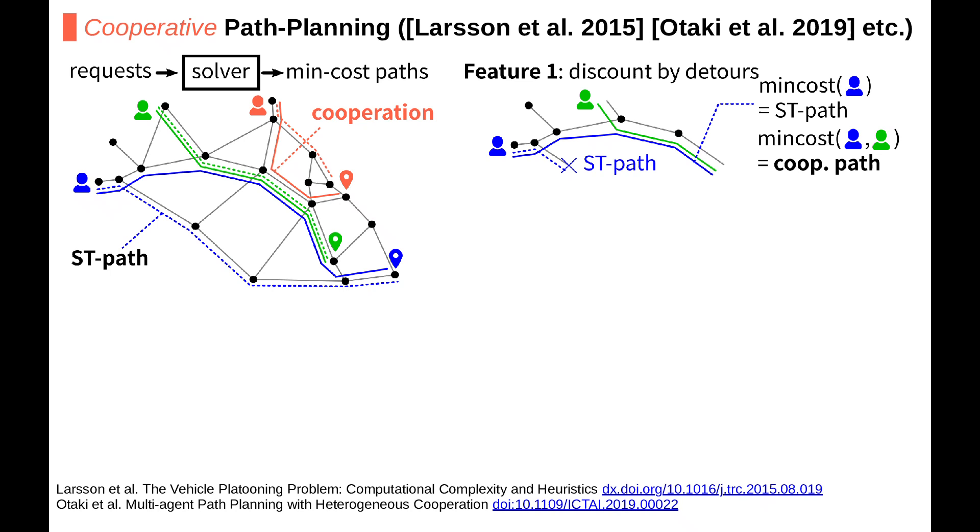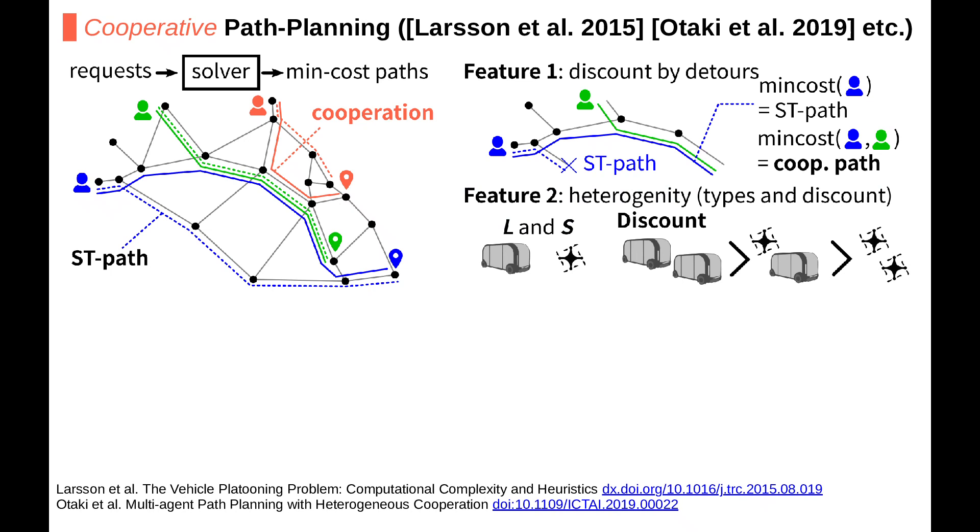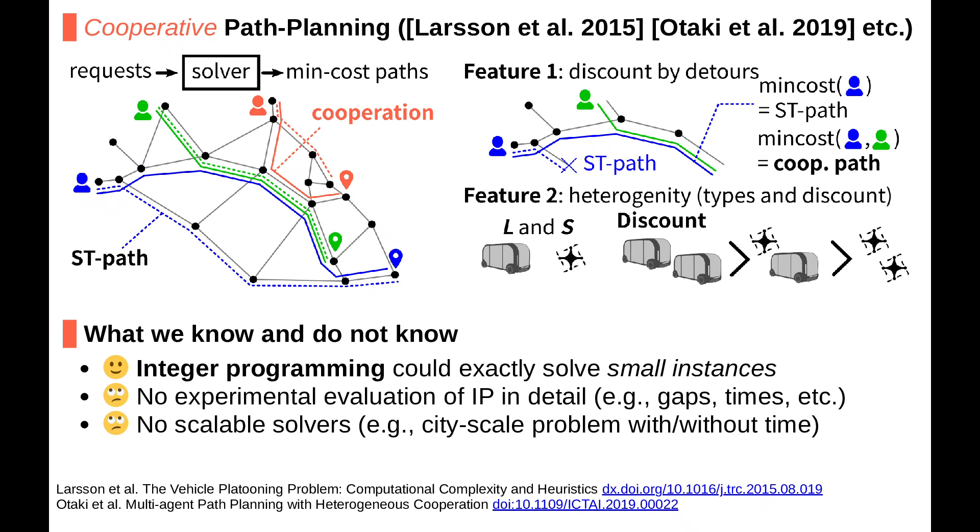The second feature is that we assume vehicle types and some order of discount effects. For example, we have a vehicle and a UAV and we have an order of discount effects like this. We prefer to select the cooperation among vehicles if possible to reduce the total travel cost.